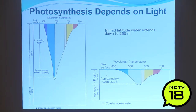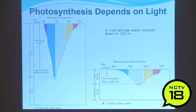Photosynthesis depends on light. Red and yellow light get absorbed near the surface; green light goes a bit deeper; blue light penetrates deepest — that's why the oceans are blue. In mid-latitude water, light extends down to about 150 meters; in coastal water maybe only 100 meters. Photosynthetic depth is deeper in mid-latitude waters because there's less algae clouding the water.